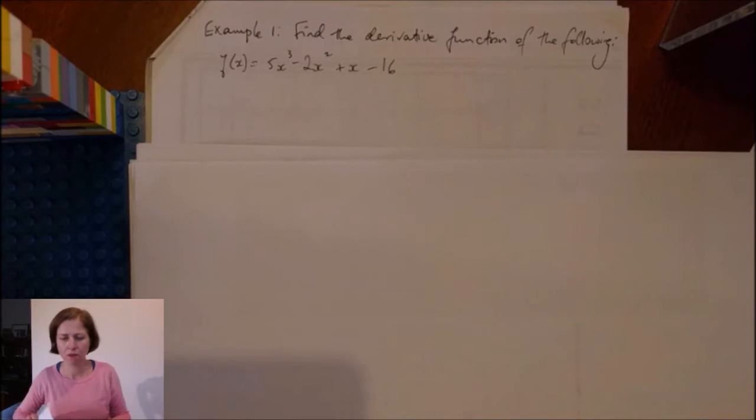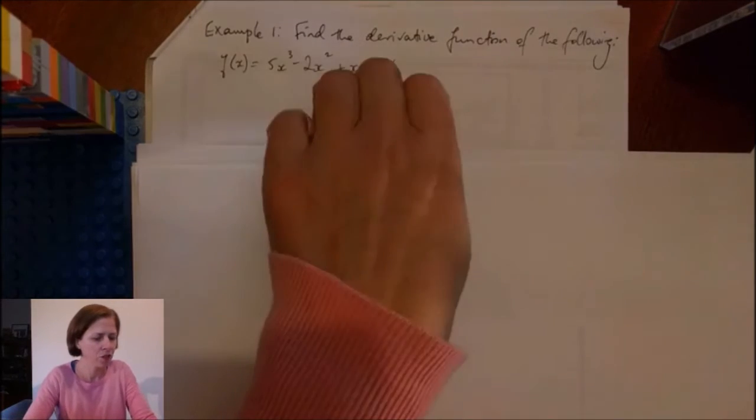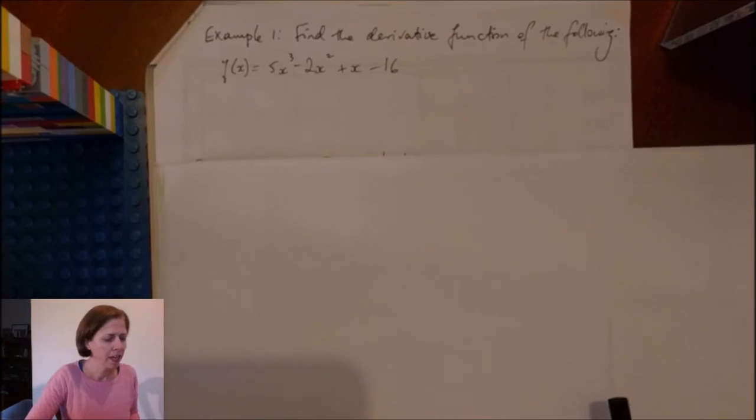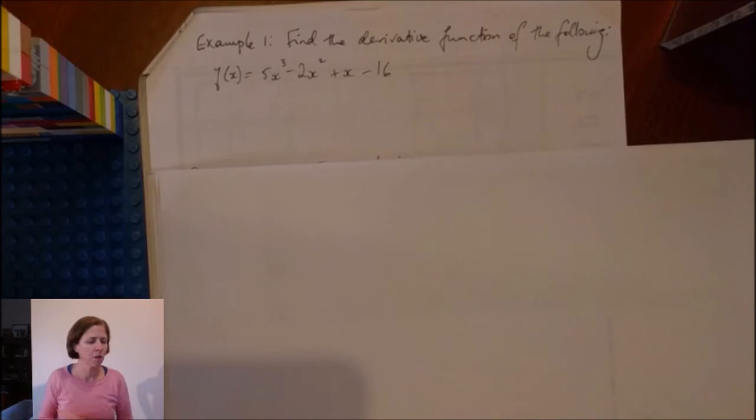All right, so for my first example, find the derivative function of f(x) = 5x^3 - 2x^2 + x - 16.